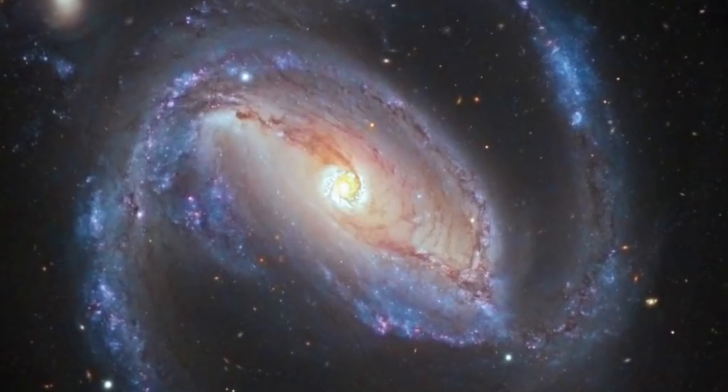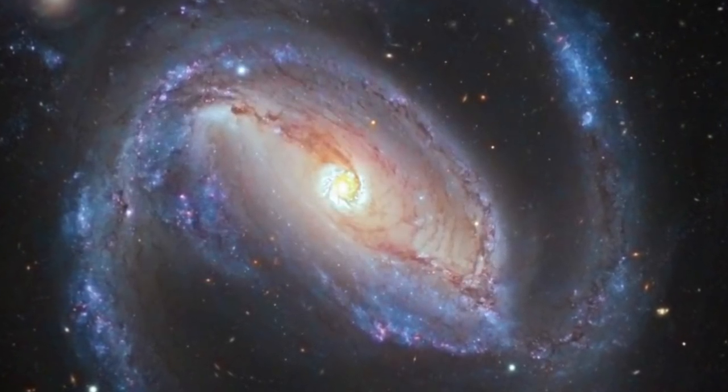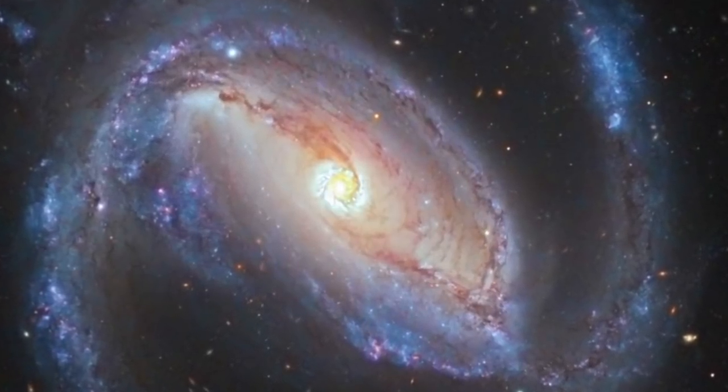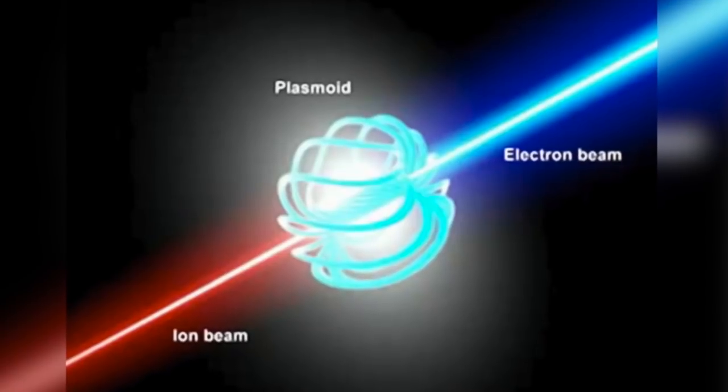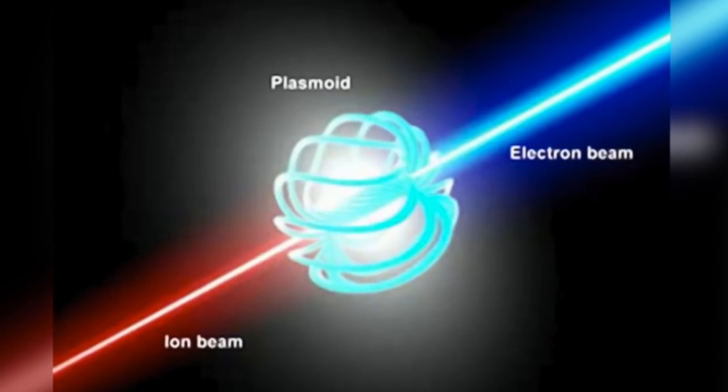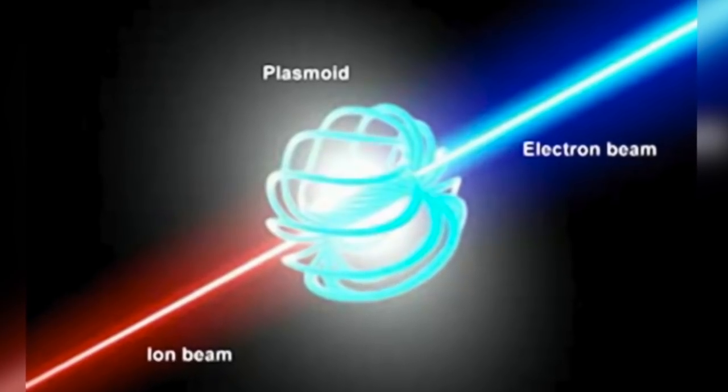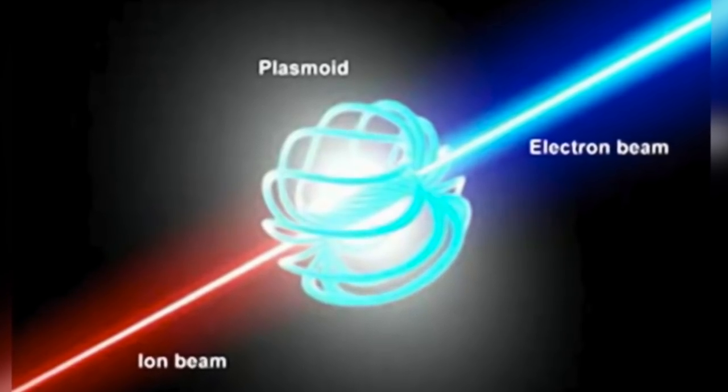As we've outlined many times, the position of plasma cosmology and the electric universe is that it is not a black hole at the center of galaxies, but an ultra-high density energy storage phenomenon, demonstrated for decades in laboratories, called a plasmoid, which is a kind of load in the galactic electrical circuit.